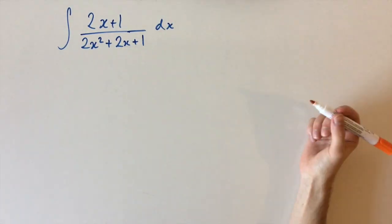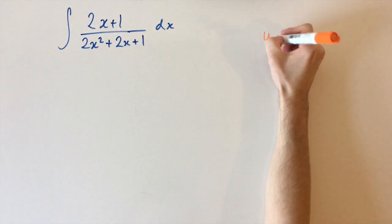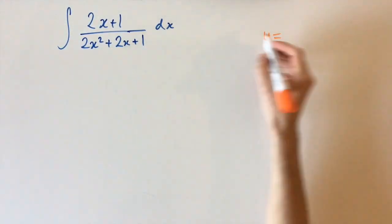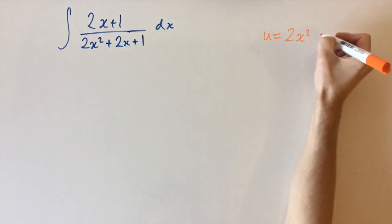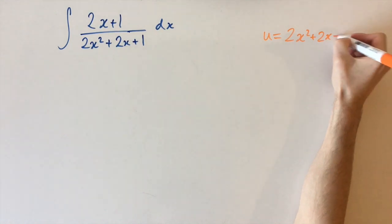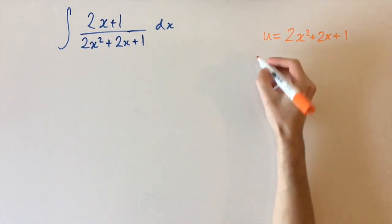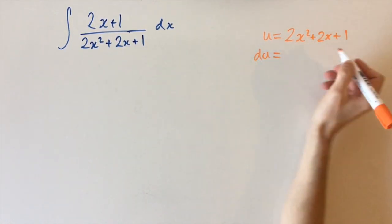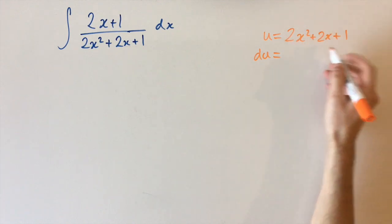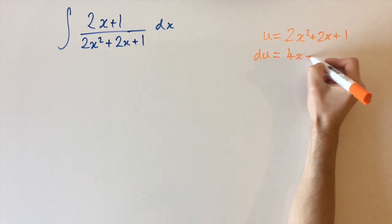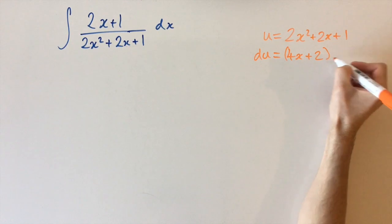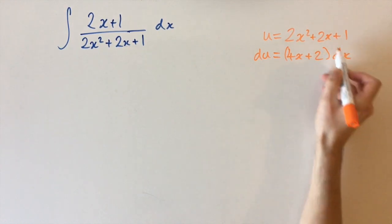So if we just let u be the whole denominator term, u equals 2x squared plus 2x plus 1, then let's differentiate this. We have du equals, just differentiating this polynomial, 4x plus 2, and then we need a dx term here.